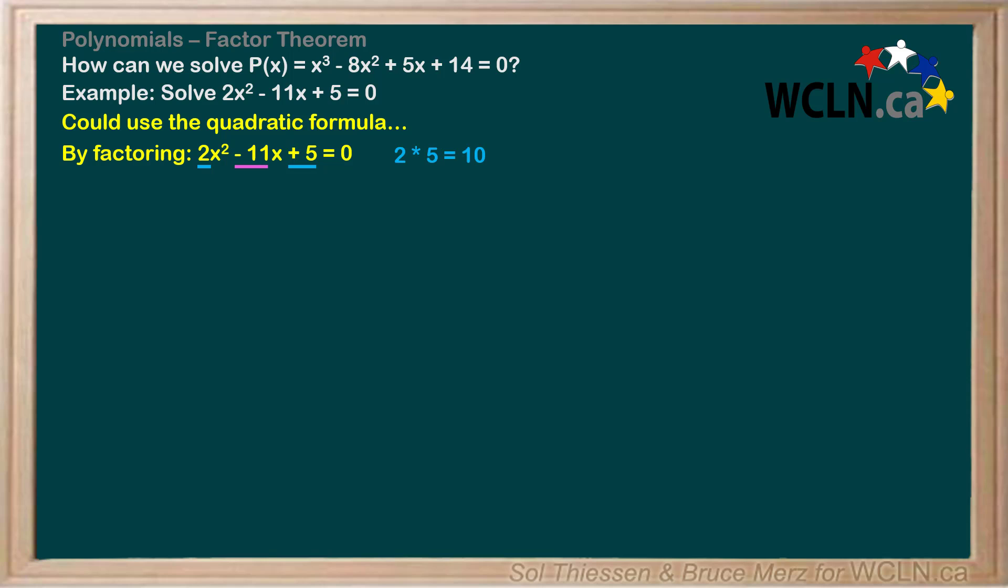Now we look to the coefficient on the x term. We're looking for two numbers that multiply to give us our magic number, 10, and add to give us the coefficient on the x term, -11. I'm going to jump right to -1 and -10, but if that's not obvious to you, you could write out all the factor pairs of 10, both positive and negative, and sift through them until you come up with one that works.